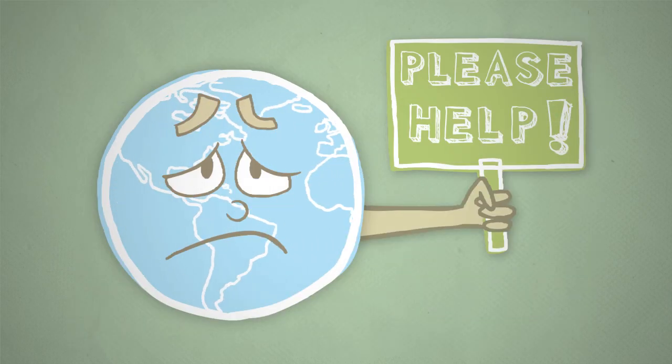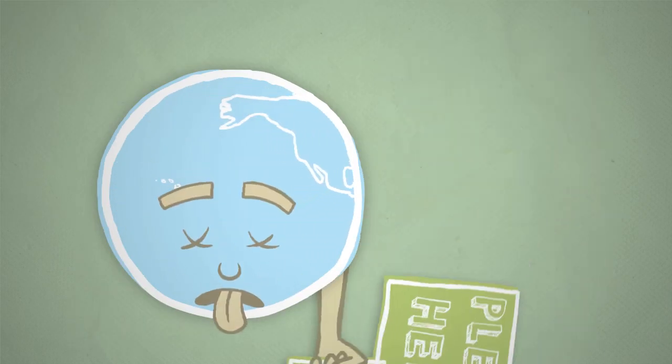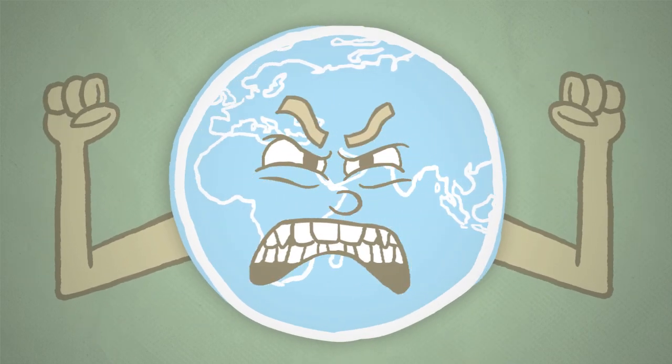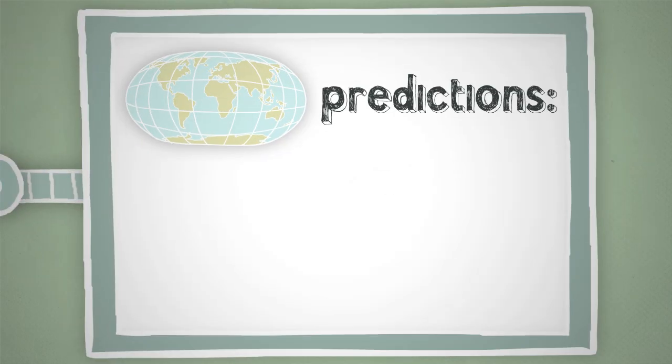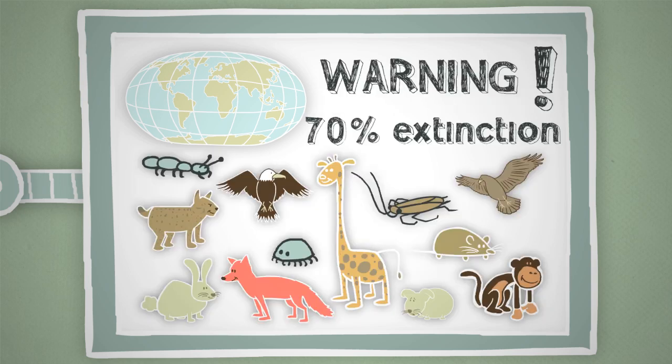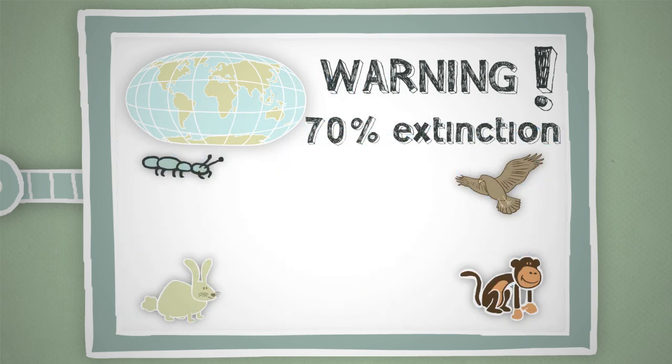In a nutshell, if we don't take action on climate change soon, we'll be living on a different planet, a planet that's very unfriendly to life. In fact, scientists predict that if Earth's temperature rises more than 3.5 degrees Celsius, or 6.3 degrees Fahrenheit, as much as 70% of species on Earth could become extinct.